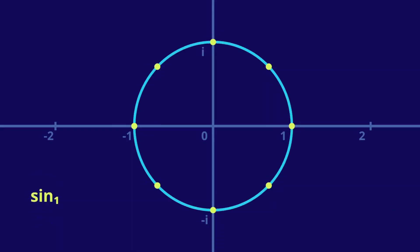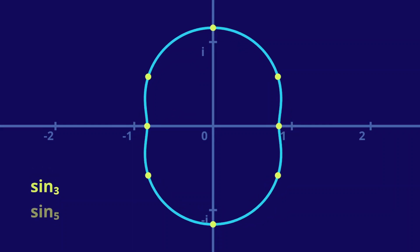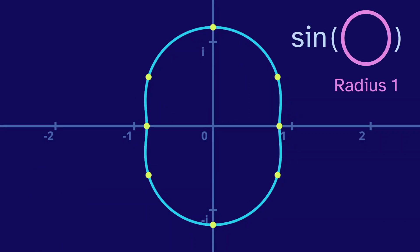We could even plot this whole circle. So, here at the end, we have a graph of the sine of the complex circle with radius 1.